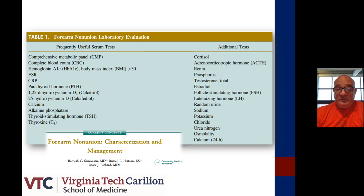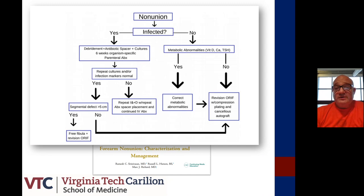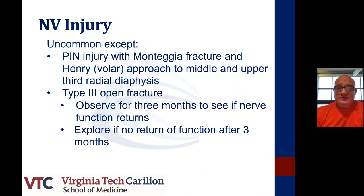I would urge you to look at the article by the orthopedic group at Duke, who characterized how to manage forearm nonunions. Their algorithm recommends free fibular grafting when there are segmental defects greater than 5 centimeters, and revision ORIF with compression plating and cancellous bone graft for smaller defects. Neurovascular injuries are more commonly associated with Monteggia fractures — posterior interosseous nerve injury — or through a proximal volar Henry approach. We tend to observe these if it's initially a nerve-stretch injury, but if there is concern of a penetrating injury or no recovery within three months, we explore these injuries.